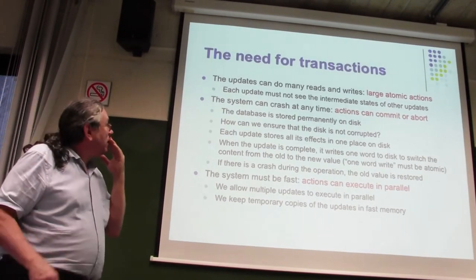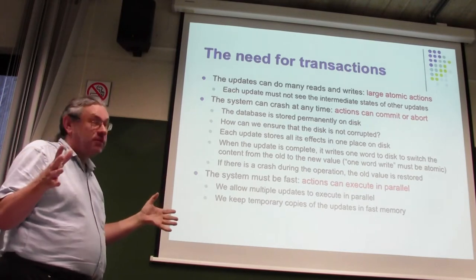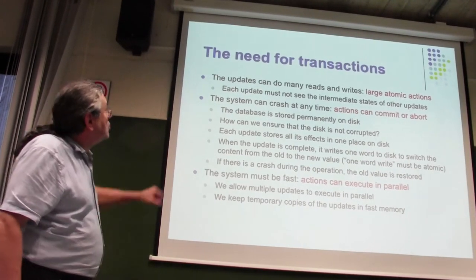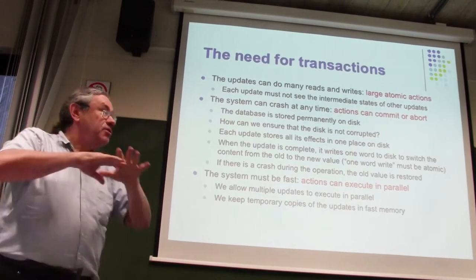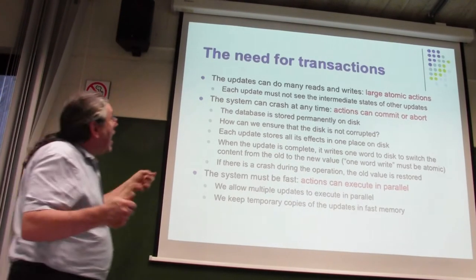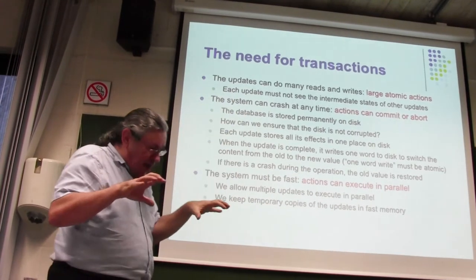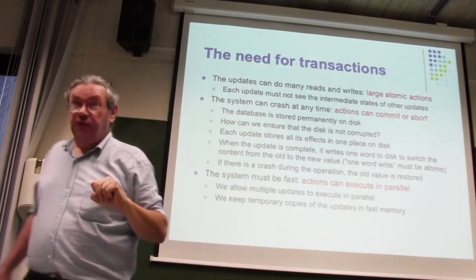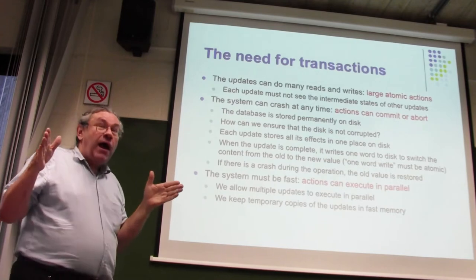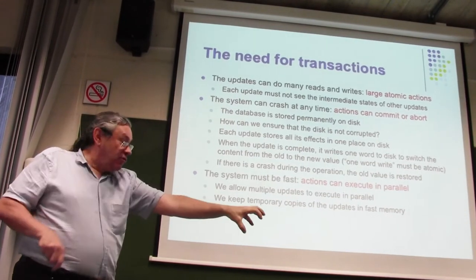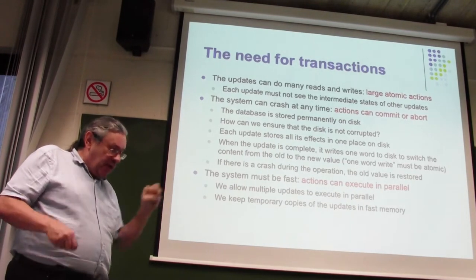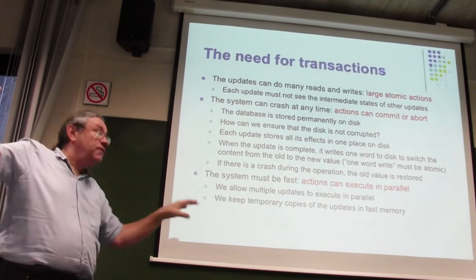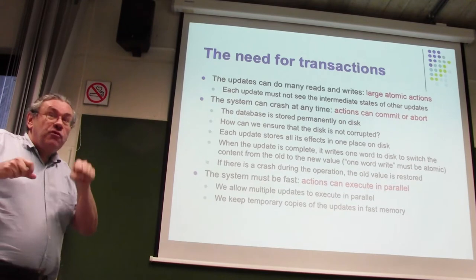To summarize what we want to do: an update modifies multiple things, like moving money from one account to another. It's a large atomic action — all or none. It must not see the intermediate states of other transactions because they're incorrect. The database is only correct after the update is completely done: it removes money from C1, at which point the database is inconsistent, and it's only when the money goes into C2 that it's consistent again.